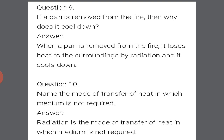If a pan is removed from the fire, then why does it cool down? When a pan is removed from the fire, it loses heat to the surrounding. The heat is transferred or lost to the surroundings by the process of radiation and it cools down. Heat flows from high temperature to low temperature, so the hotter pan loses heat to the cooler surroundings by radiation.